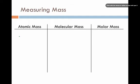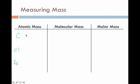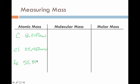Let's look up a couple of elements. We'll go with carbon, chlorine, and iron. A quick look at the periodic table tells us carbon is 12.0107 atomic mass units, chlorine is 35.453 atomic mass units, and iron is 55.845 atomic mass units.